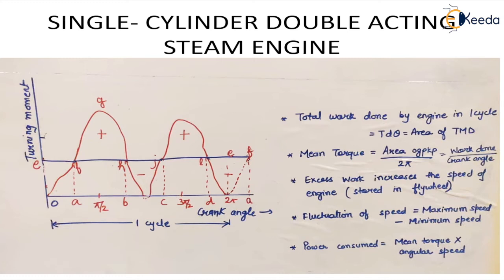We will plot the turning moment diagram for a single cylinder double acting steam engine. The double acting engine is one in which the working fluid acts on both sides of the cylinder. While plotting, we keep turning moment on the y-axis and the crank angle theta on the x-axis, and we plot for one complete cycle. For a four stroke engine we plot for 4π; for a two stroke engine we plot for 2π crank rotation angle.